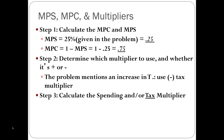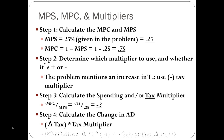The tax multiplier formula is negative MPC over MPS. Our MPC is 0.75 and MPS is 0.25, so we have negative 0.75 over 0.25, which gives us negative 3. We have a negative multiplier. Now we take that multiplier times our change in taxes: 200 billion euros times negative 3 gives a negative 600 billion euro change in aggregate demand. Real GDP will fall by 600 billion euros.